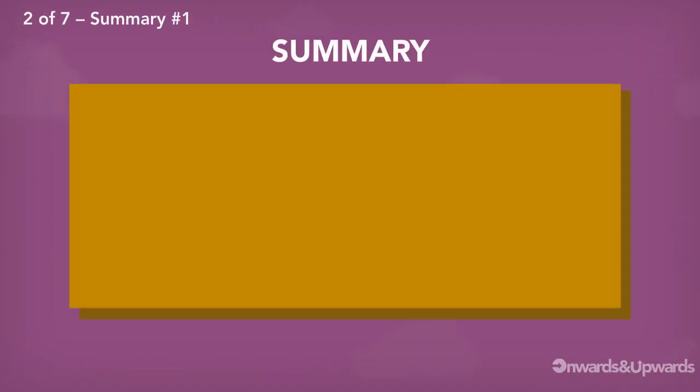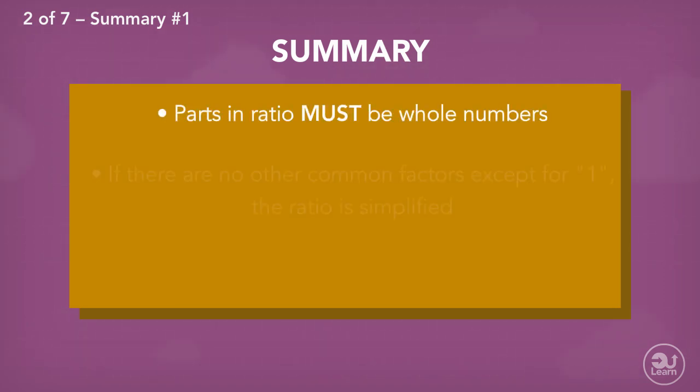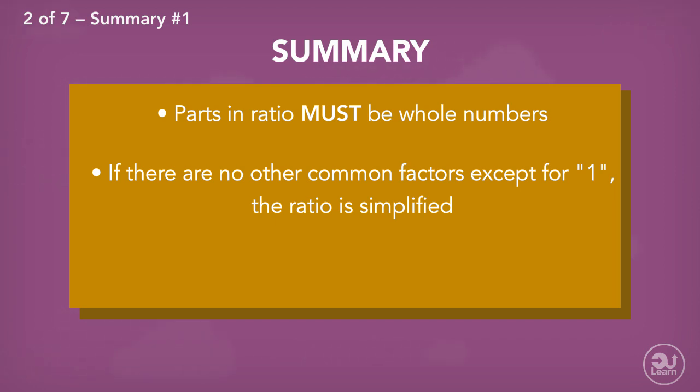So to summarize, when simplifying ratios with decimals, the final simplification must have parts that are whole numbers and have no common factors except for 1. To change a decimal that isn't recurring into a whole number, multiply it by a factor of 10 until there are no more decimals.